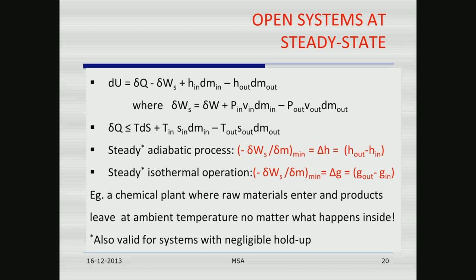For open systems you have to subtract off flow work, so you redefine shaft work or useful work accordingly. You can then ask what is the minimum work required in a steady adiabatic flow process, and you get −δWS/δM = ΔH. Similarly in steady isothermal operation it is equal to ΔG. This is also valid for systems with negligible hold-up. For a whole chemical plant where raw materials enter and products leave at ambient temperature and pressure, you can simply calculate ΔG between the products and the raw materials — this is the minimum work you have to do. The actual work will be much more, but it is remarkable that thermodynamics makes such predictions without paying attention to the details.